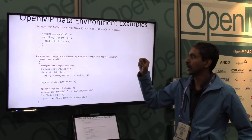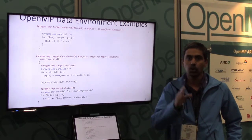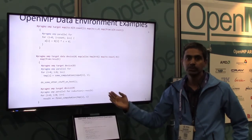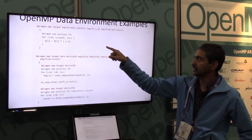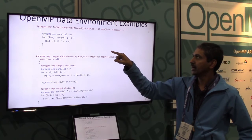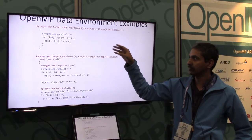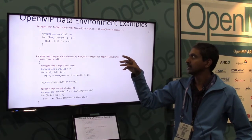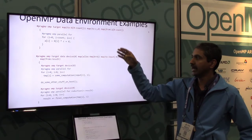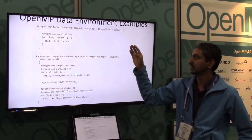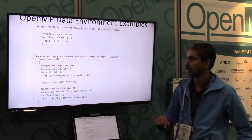This is a scoped data environment region. At the beginning of this region, you are saying that you want to map 'to' — meaning from the host to the device — and 'from' means you map it back once the region's execution on the device is completed. You can see that the mapping of the array as well as the scalar variables C and D happens at the beginning of the data environment, and for the duration of this data environment, these variables will be available on the target device. At the end of the region, you map the result in A back to the host using map from A[0] to count.